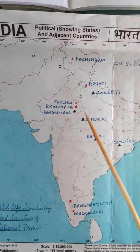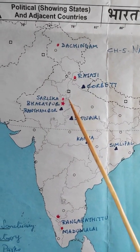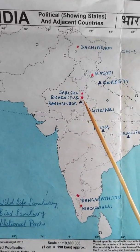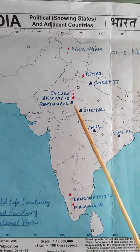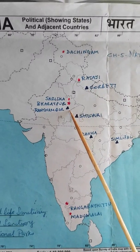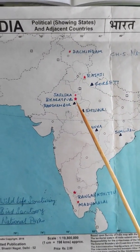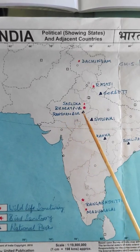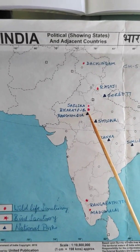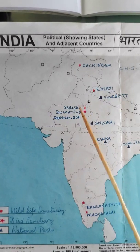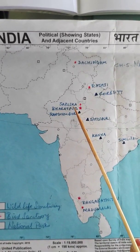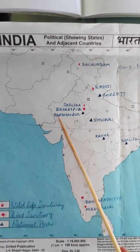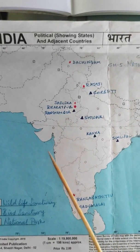In Rajasthan, it is important to understand that there is a national park, a wildlife sanctuary, and a bird sanctuary all approximately at the same location. If they ask you to identify the bird sanctuary, remember it is Bharatpur. If they ask for the wildlife sanctuary in Rajasthan, it is Sariska. And if they ask for the national park of Rajasthan, it is Ranthambore.